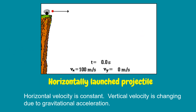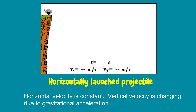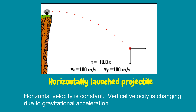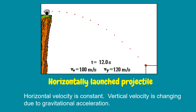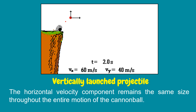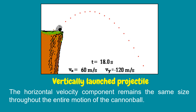In a horizontally-launched projectile, the horizontal velocity is constant. As you can see in the animation, horizontal velocity throughout the motion is 100 meters per second, while vertical velocity is changing due to gravitational force. In a vertically-launched projectile, the horizontal velocity remains the same throughout the motion, while vertical velocity is increasing negatively towards the gravitational force.